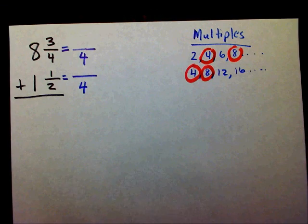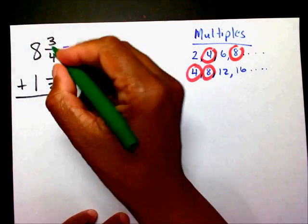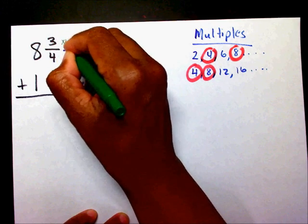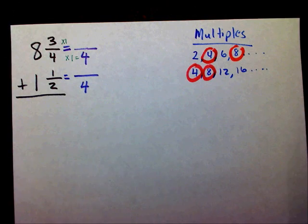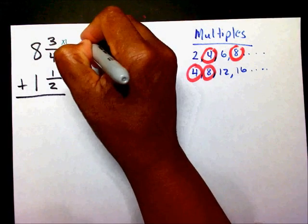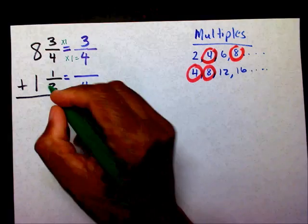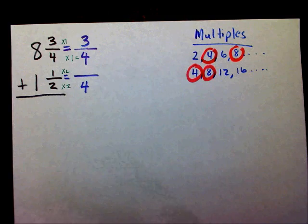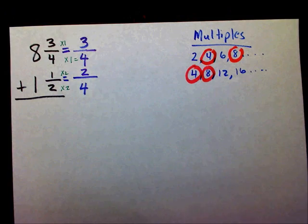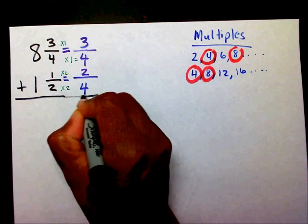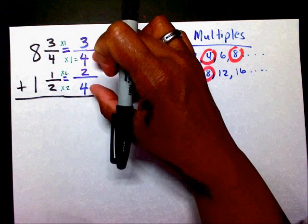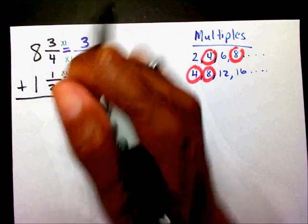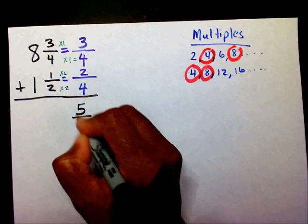So I'm going to say 4 times 1 is 4, and 3 times 1 is 3. I know that 2 times 2 is 4, and 1 times 2 is 2. Now that I have my same denominators, my new denominator is 4. I can now add these two fractions. 3 plus 2 is 5, and that's going to be over 4.